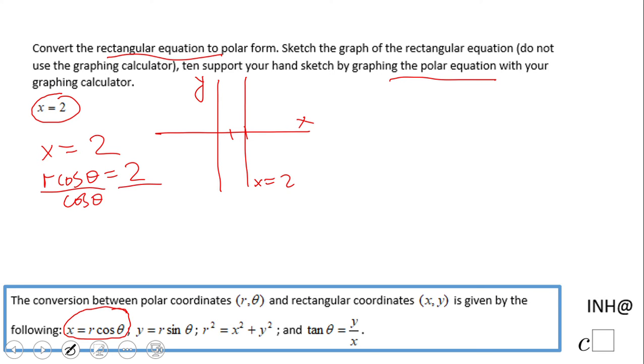I have r equals 2 over cosine of theta, which is a very good form. However, another form for this will be 2 times the reciprocal of cosine, which is secant of theta.